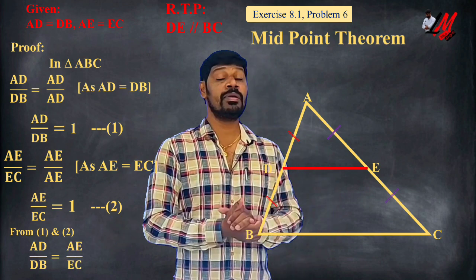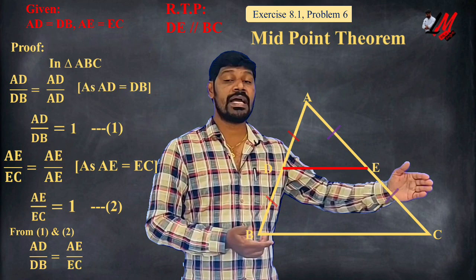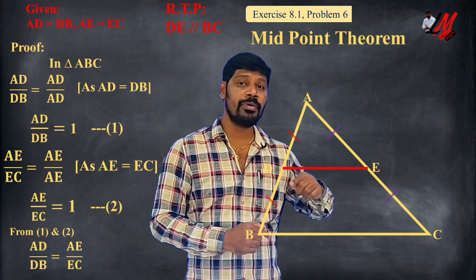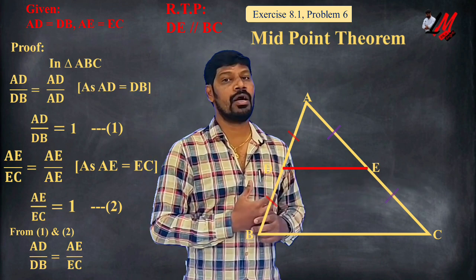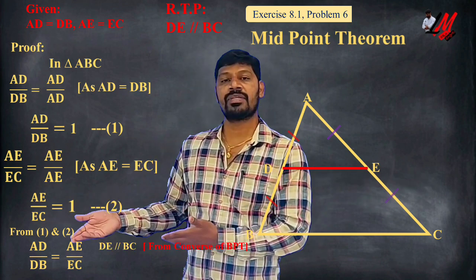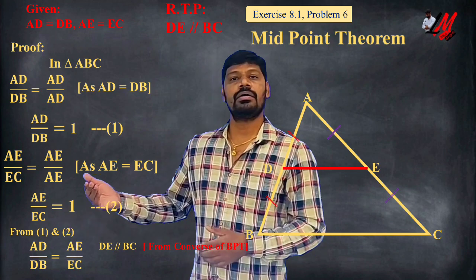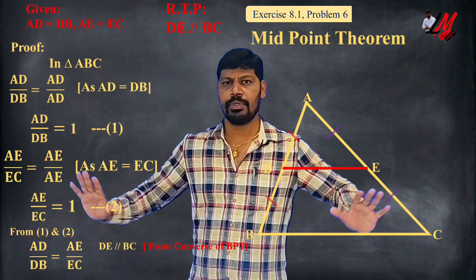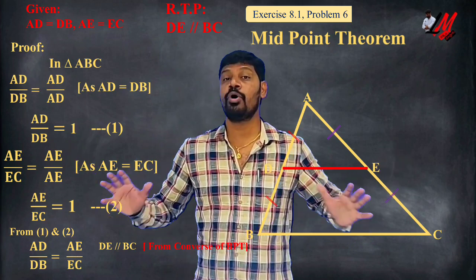By the Converse of the Basic Proportionality Theorem, if a line divides two sides of a triangle in equal ratios, then the line is parallel to the third side. Therefore, DE is parallel to BC. This is what we needed to prove. This result is very, very important.